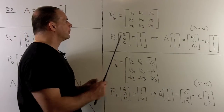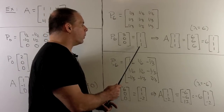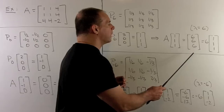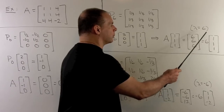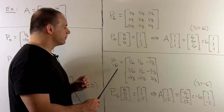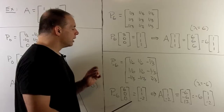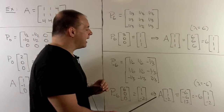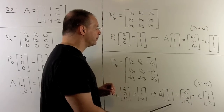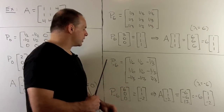For P_6, applied to (3, 0, 0), we get (1, 1, 1). Applying A to (1, 1, 1) gives (6, 6, 6), confirming an eigenvector with eigenvalue 6. Finally, for P_{-6}, applied to (6, 0, 0), we get (1, 1, -2). Applying A to (1, 1, -2) gives (-6, -6, 12), which is -6 times our original vector. So we confirm the property of eigenvalue equal to -6, and that checks our projection.